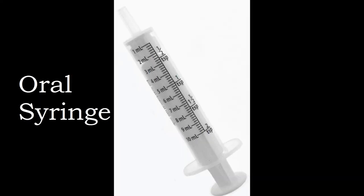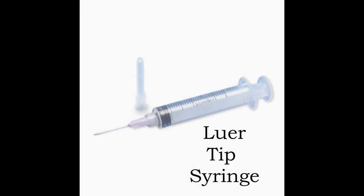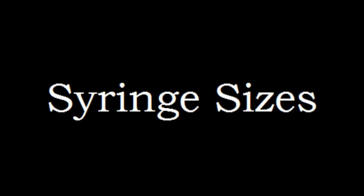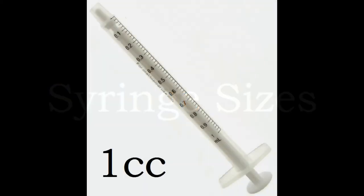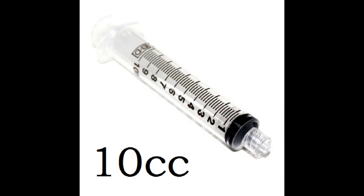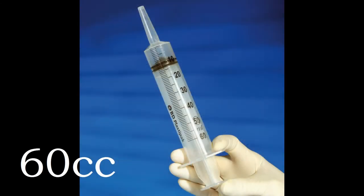Speaking of syringes, there are two types: the oral syringe for oral medications, and the luer tip syringe, which is the needle syringe. They also come in many sizes: 1 cc, 3 cc, 6 cc, 10 cc, 12 cc, 35 cc, and 60 cc. Good thing that's an oral syringe or I'd be really freaking out right now!